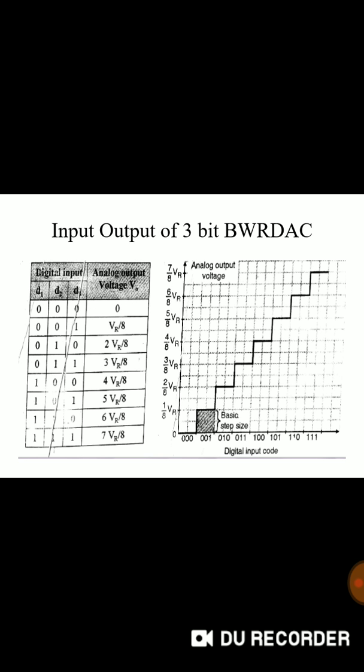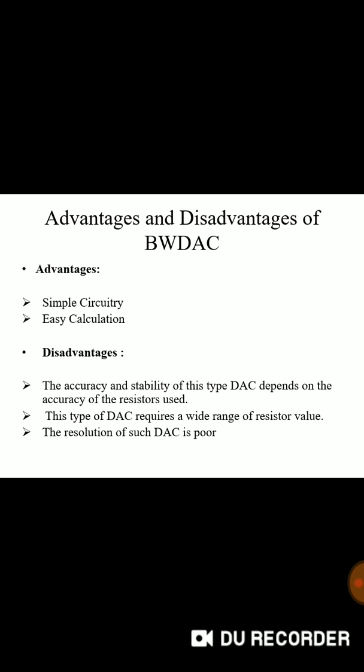For all 0's value will be 0, for 001 combination value will be VR by 8, for 010 it will be 2 VR by 8 and till last input signal that is 111 it will be 7 VR by 8. Simple circuitry easy calculation are the advantages. Accuracy and stability are the problems and wide range of resistance values are required. Resolution is also poor. These are disadvantages.